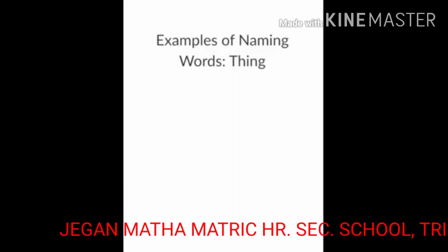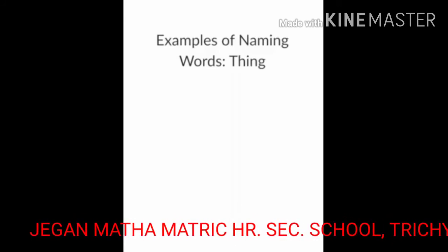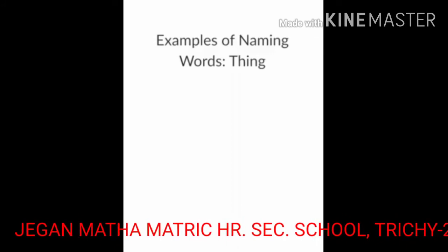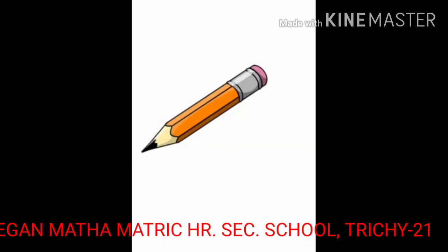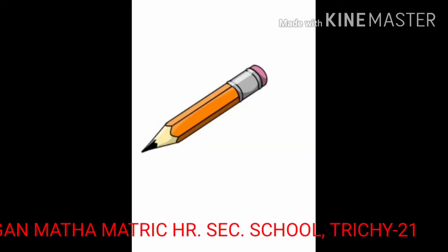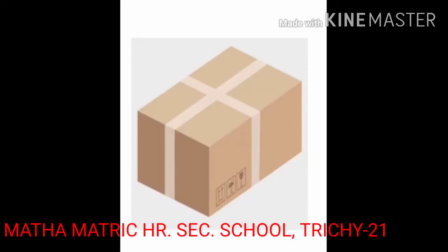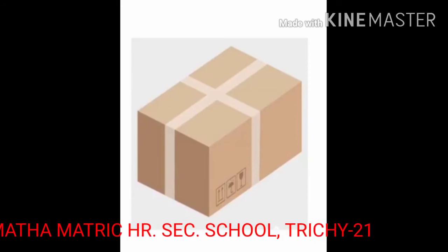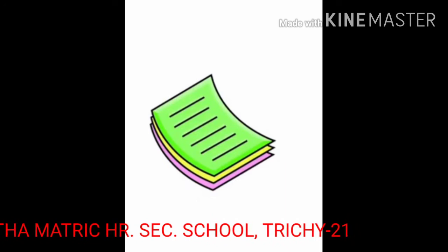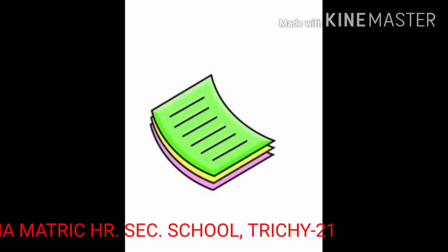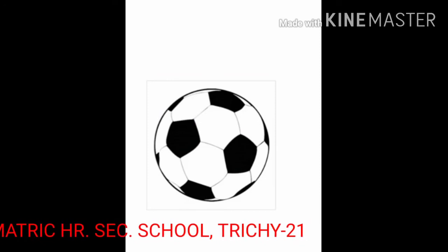Example of naming words — things. Pencil: P-E-N-C-I-L. Box: B-O-X. Paper: P-A-P-E-R. Ball: B-A-L-L.